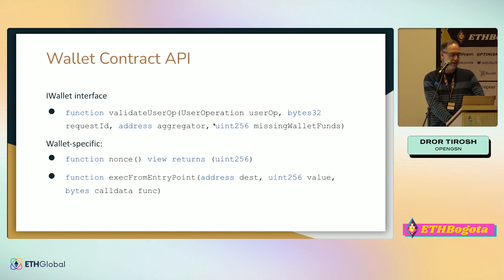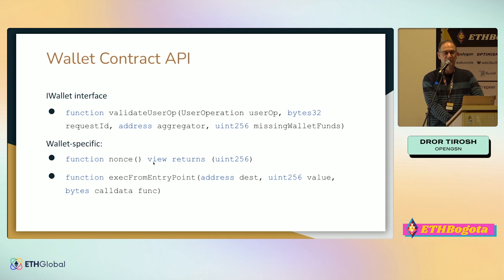If validate user op succeeds, then the entry point will call the call data. There are two wallet-specific functions — we don't mandate their names, but the wallet has to provide them. One is nonce, to return the current nonce value when we create a transaction. The other is the method that will be executed from the entry point; in our sample wallet we call it exec from entry point, which we think is a good name. The wallet has to have implementations for both of these methods.